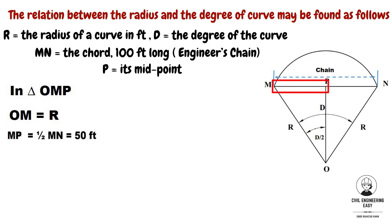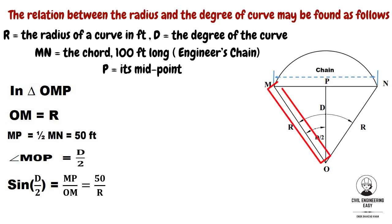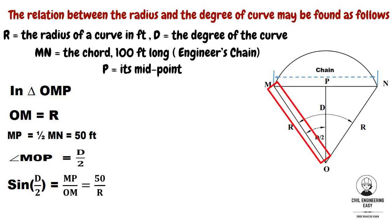MP equals 100 divided by 2, which equals 50 feet. The angle MOP equals D/2. Then sine of D/2 equals MP divided by OM, where MP equals 50 feet and OM equals the radius R. Therefore R equals 50 divided by sine of D/2.